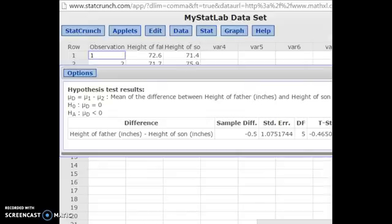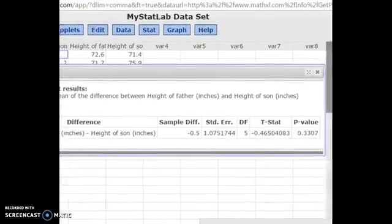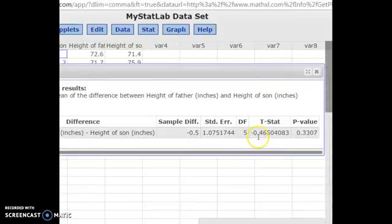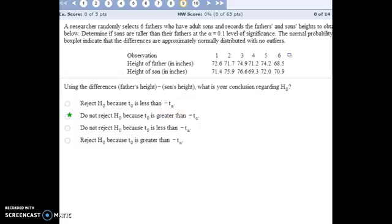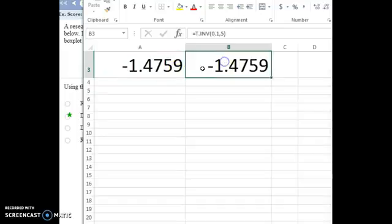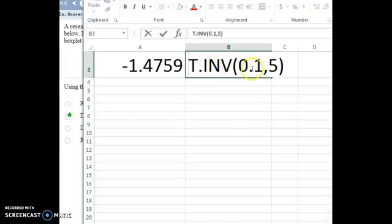the t-stat, which here we have negative 0.465. And we need to use the classical approach for this problem. Because that's the way the answers are phrased. And so we need to find what the critical value is. When alpha equals 0.1. So our critical t value. In Excel, you can use the formula t dot inverse. Enter what your alpha is. And your degrees of freedom. We have 5 degrees of freedom because there were 6 pairs of matched data in this experiment. And so here's what we get for our critical t value. And Excel gives you the left tail test, the less than test, which is what we want. So negative 1.4759.